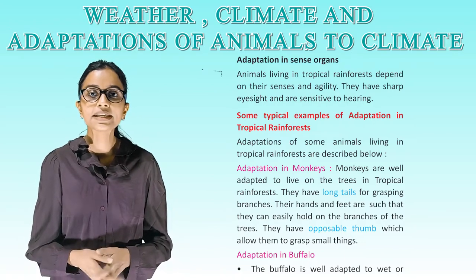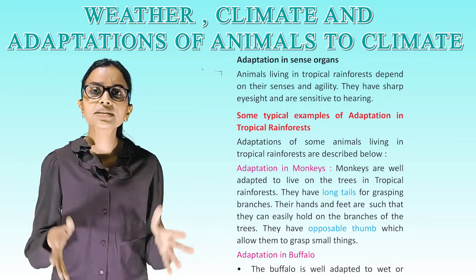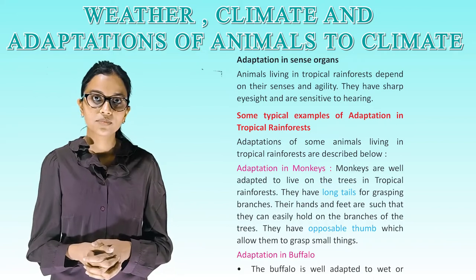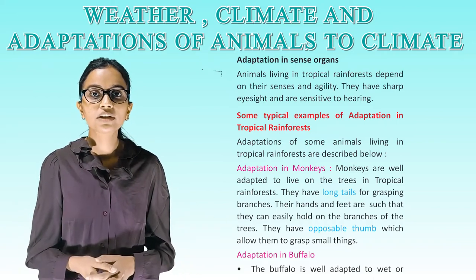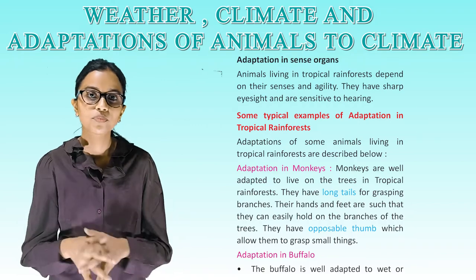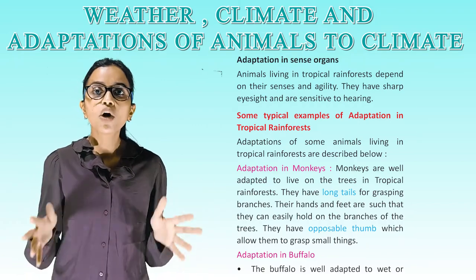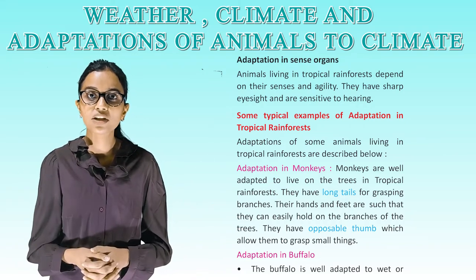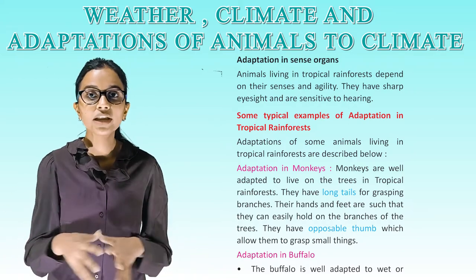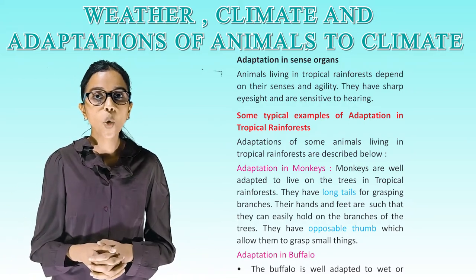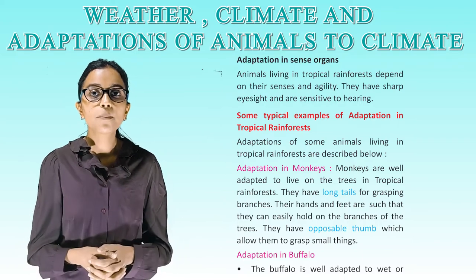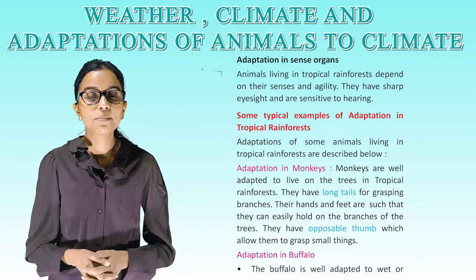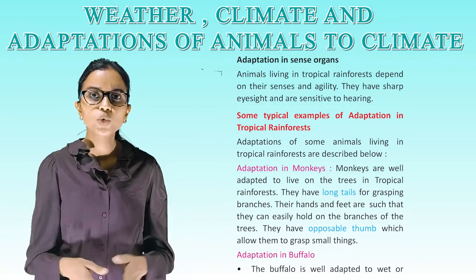Adaptation in sense organs: animals living in tropical rainforests depend on their senses and agility — they have sharp eyesight and are sensitive to hearing. Adaptation in monkeys: monkeys are well adapted to live on trees in tropical rainforests. They have long tails for grasping branches. Their hands and feet are such that they can easily hold onto branches of trees. They have a opposable thumb which allows them to grasp small things.